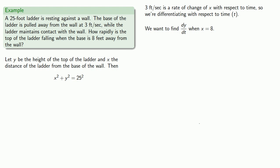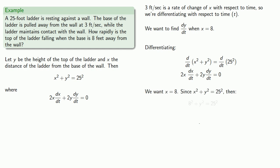So we have our relationship between x and y so let's differentiate with respect to time. We want x equal to eight and since x squared plus y squared equals 25 squared then we can find y.